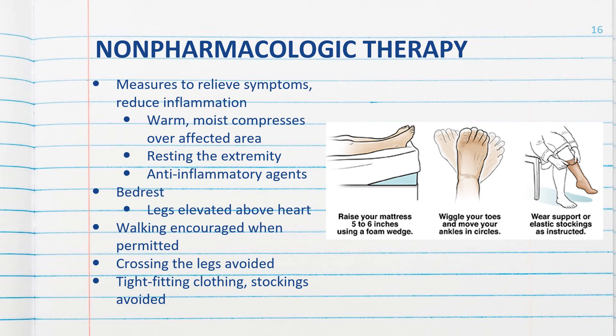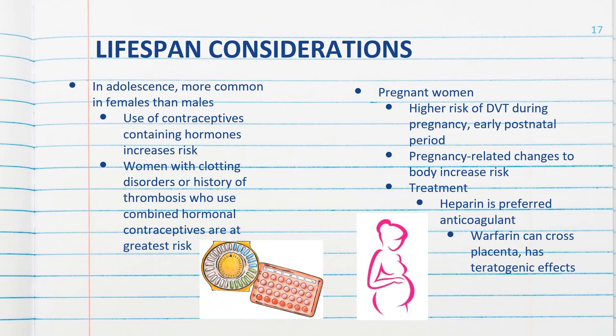When allowed, walking is encouraged, as is avoiding prolonged standing or sitting. Crossing the legs is avoided, as are tight-fitting garments or stockings that bind. Safety alert: compression stockings or pneumatic compression devices are contraindicated if the patient already has a DVT. They are used for prevention of DVTs, but once the patient has a DVT, we avoid any type of pneumatic compression device or compression stockings.